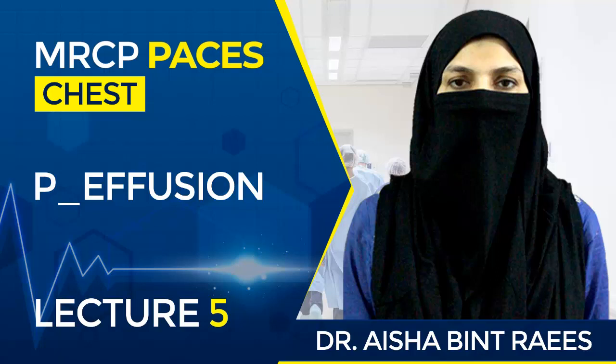There are many causes of pleural effusion — exudative and transudative. For transudative, protein is less than 30 g/L; causes include CCF, hypoalbuminemia, nephrotic syndrome, cirrhosis, uremia, and hypothyroidism. For exudative, protein is more than 30 g/L; causes include neoplasia, connective tissue disorders, infections, pulmonary infarction, and drugs.